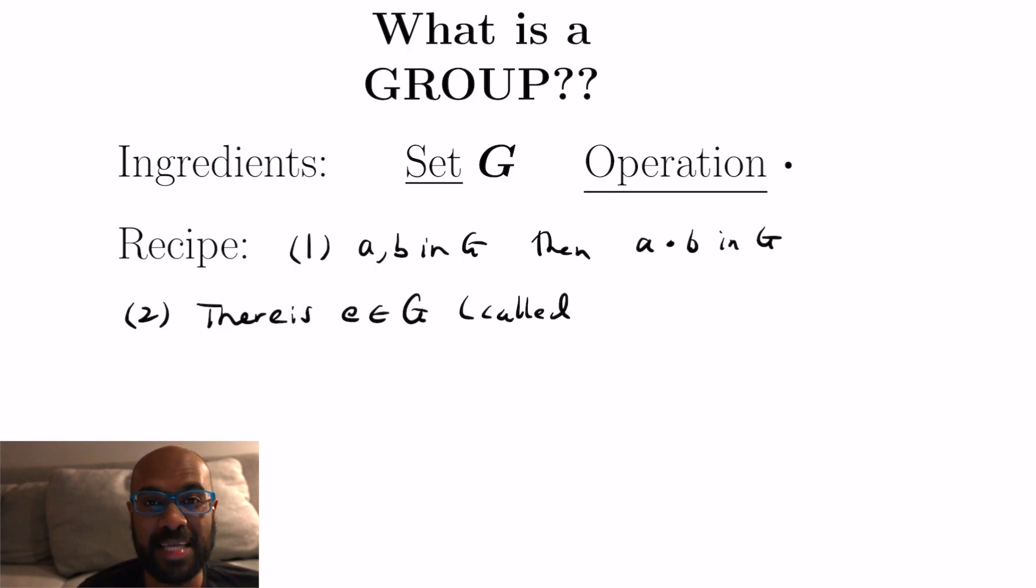Next we have an idea of an identity and we saw this identity in the two examples above. The complex number one or the map that does nothing to the plane. So the thing that has to happen with the identity is if we apply the operation to the identity to any element in our set G in any direction, so a dot e or e dot a will be a itself. So the identity doesn't do anything to any of these different objects in our group G.